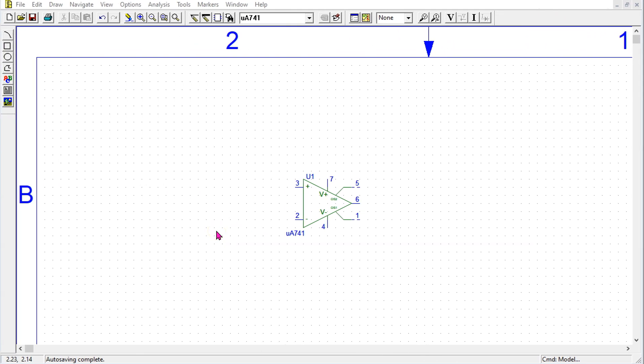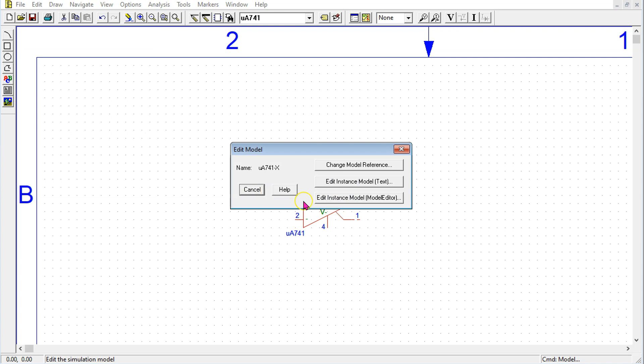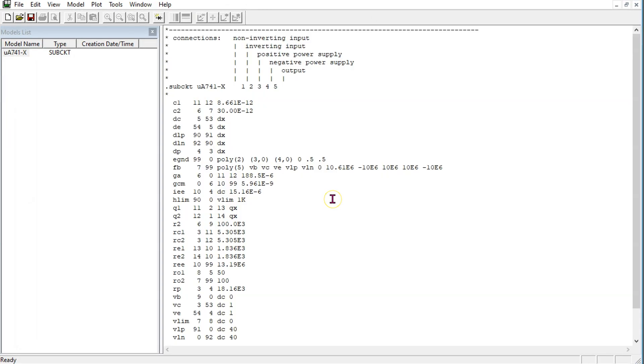The 741 op-amp is available in PySpice. If we select the op-amp, then click Edit, Model, Edit Instance Model, we can see the actual macro model for the op-amp. And this macro model is actually based on the Boyle macro model.